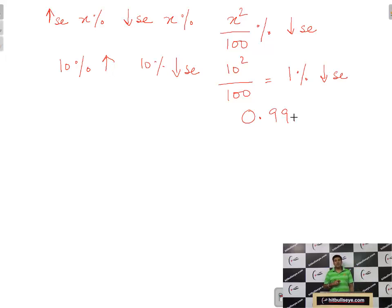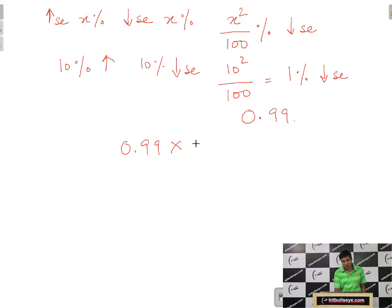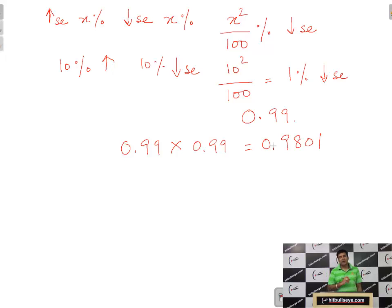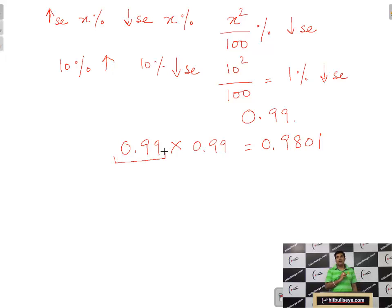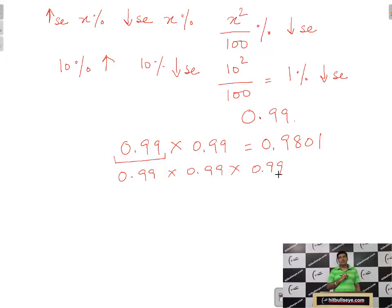The problem is: after how many cycles of 0.99 will the result be a loss of more than 10% for the first time? If we check for 2 such cycles, that is 0.99 × 0.99, the square of 99 is 9801. So we realize the net effect is not exactly 2% but slightly less, as the second reduction of 1% is applied not on 100 but on 99. Therefore, we need 1 more cycle of 0.99 to reduce it by more than 2%.